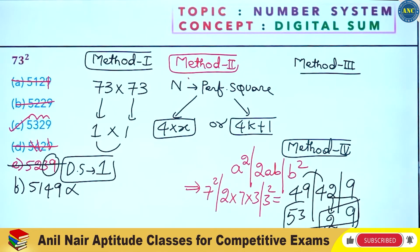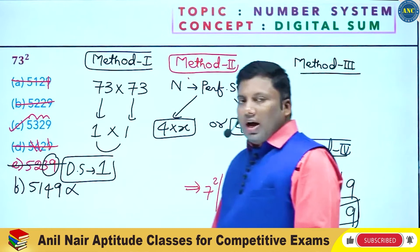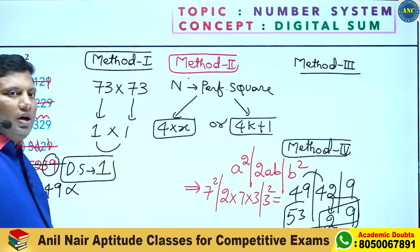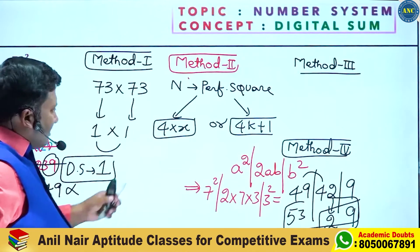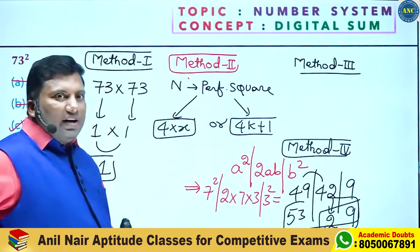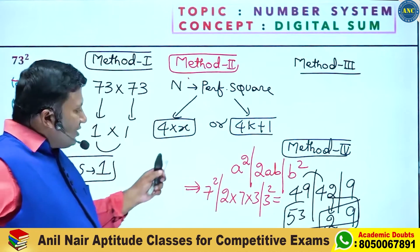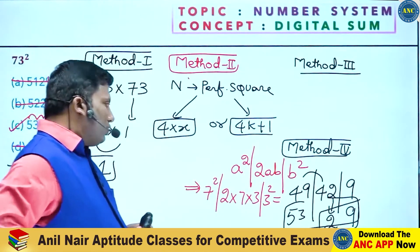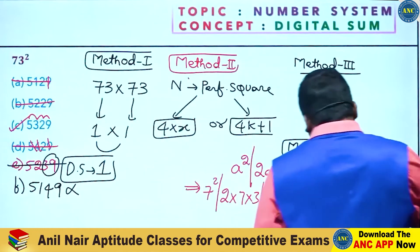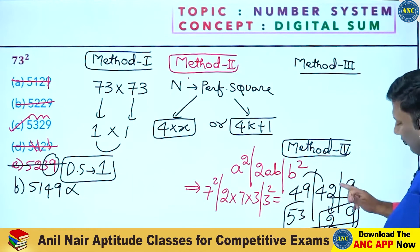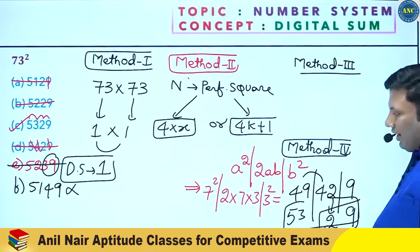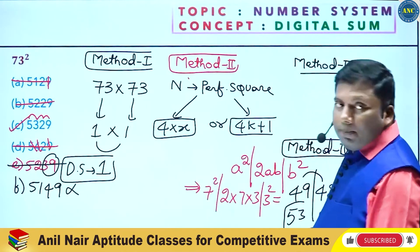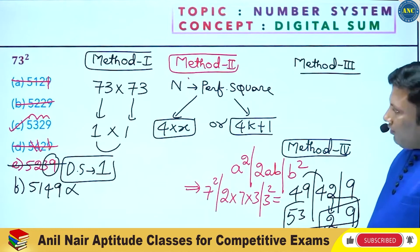The correct answer is 5329. Working: 7 square is 49, 2 into 7 into 3 is 42, 3 square is 9. Unit digit of 42 is 2, carry 4. Then 49 plus 4 is 53. So the answer is 5329.